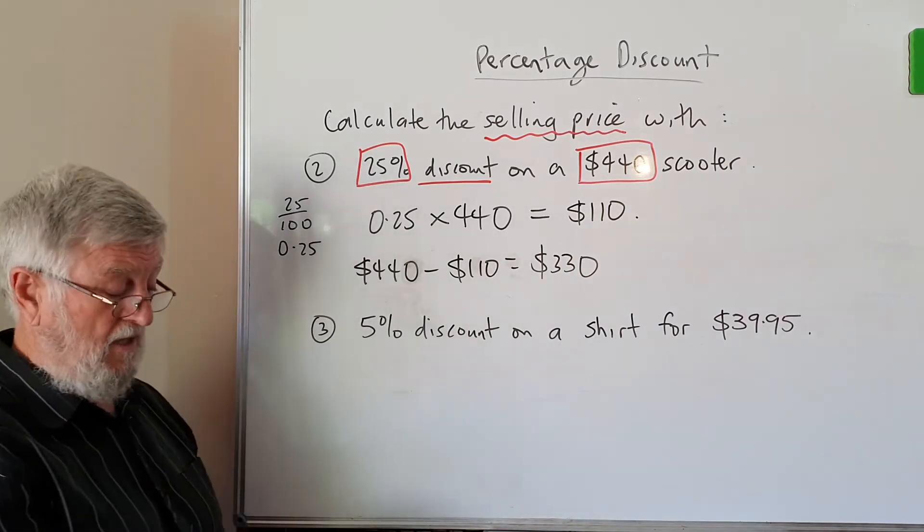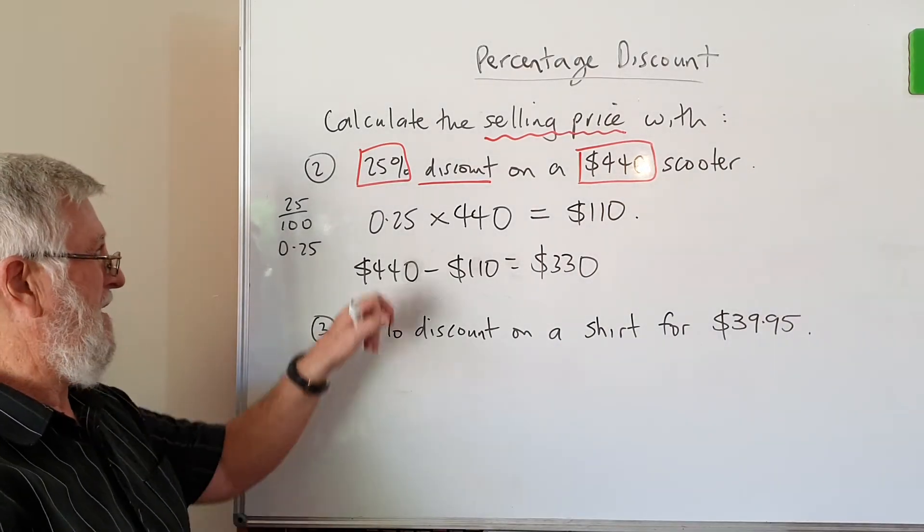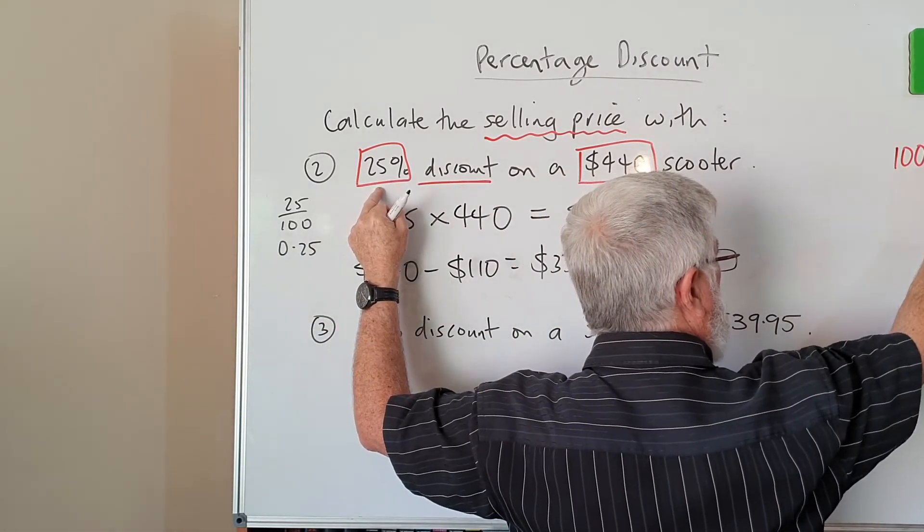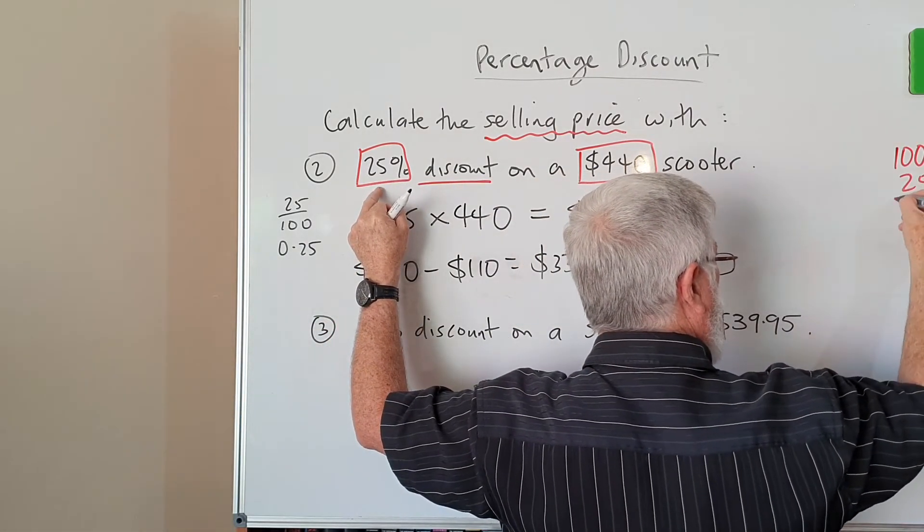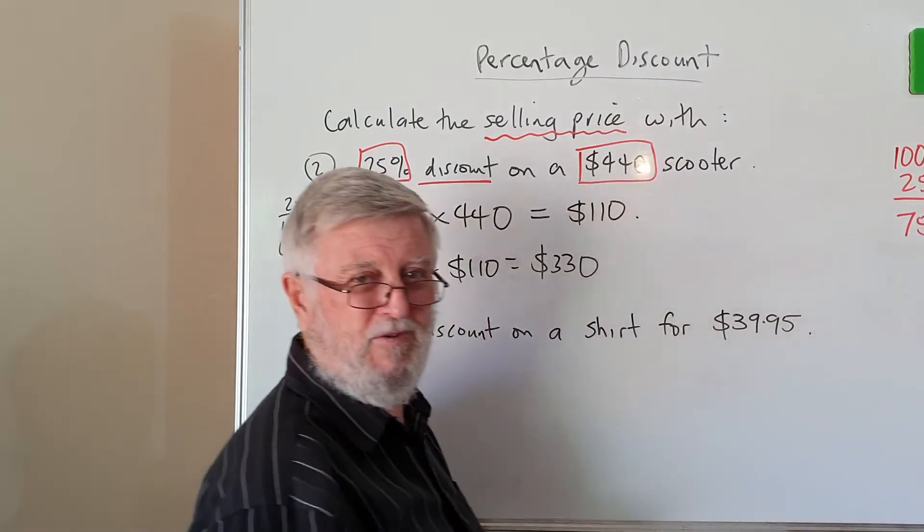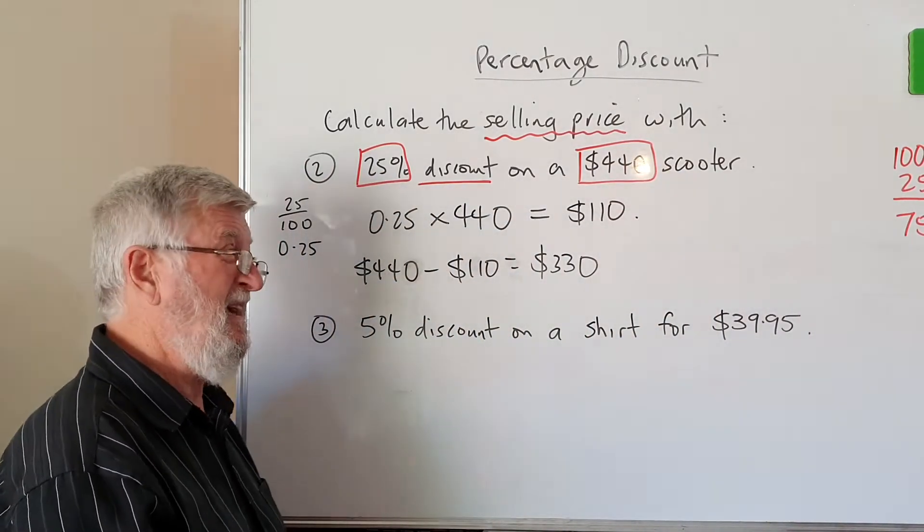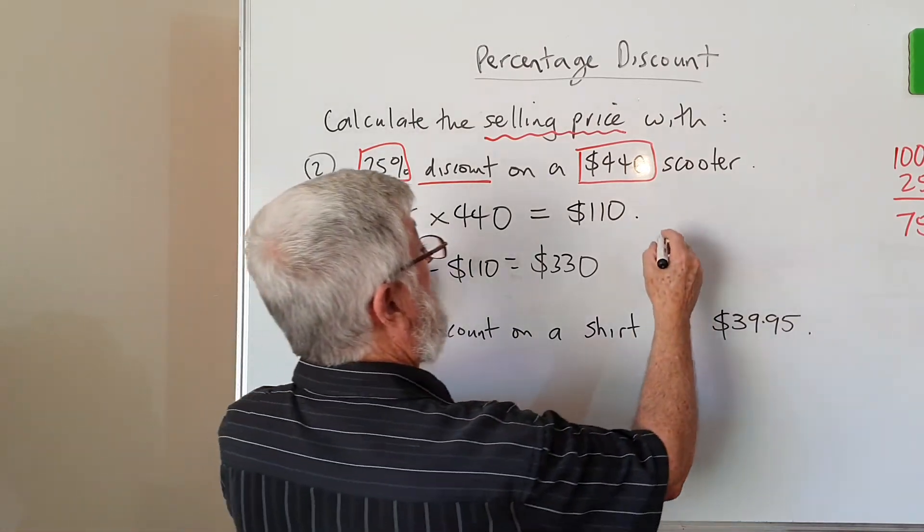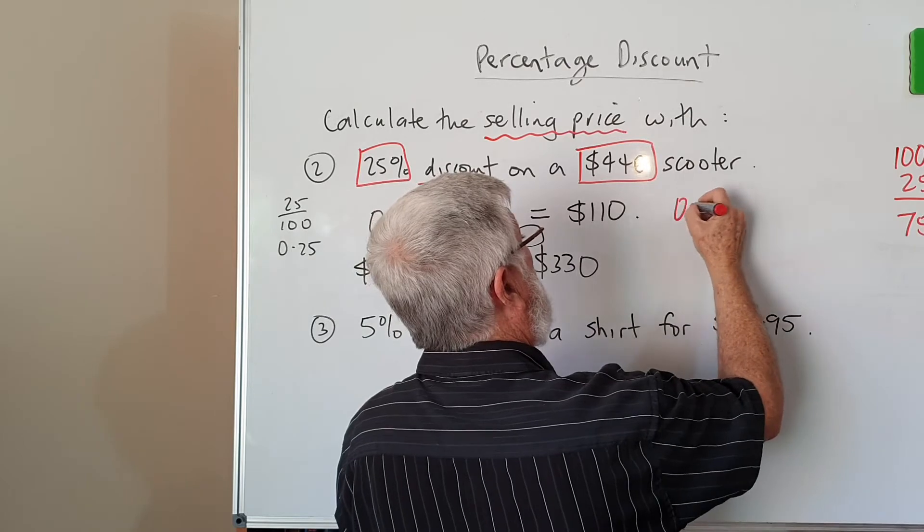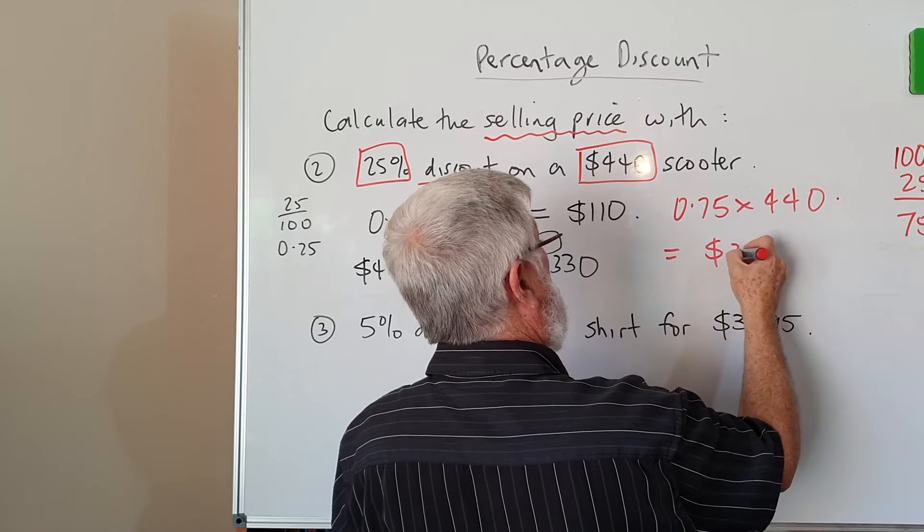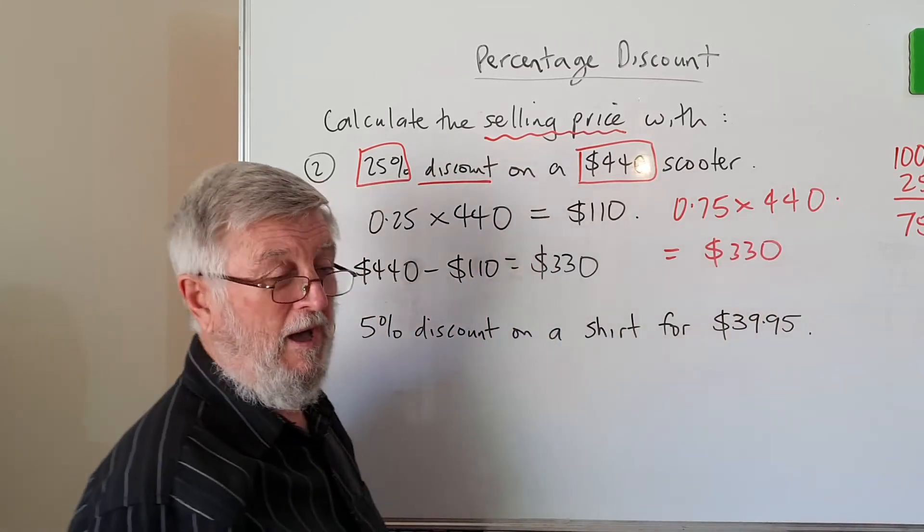Now I will mention in case some people are comfortable with it, 25% discount means instead of paying 100%, I'm going to take off 25% and I'm going to pay 75%. So if that works for you, it's a nice shortcut. I don't find a lot of people really comfortable with it, but some are. So I could have instead gone 0.75 times the 440, and then I end up with the 330. It tells me the answer straight away.